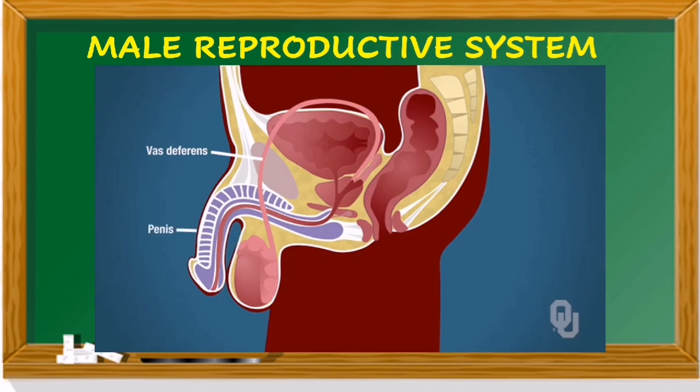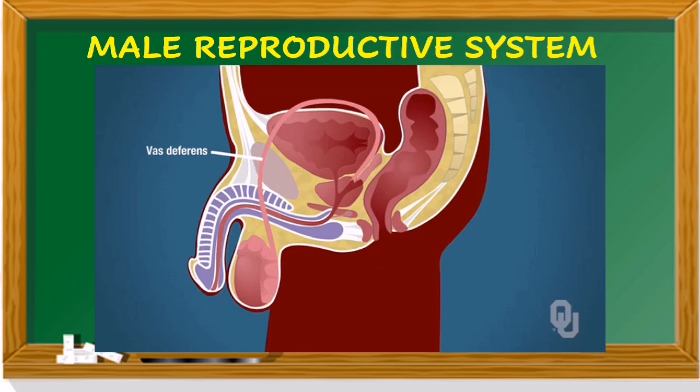Here we have the male reproductive system. The parts include the vas deferens, testes, scrotum, prostate gland, and others that we are going to talk about in our lesson.